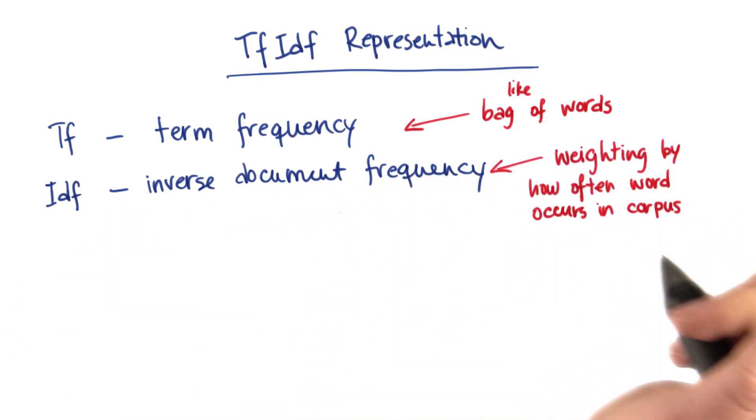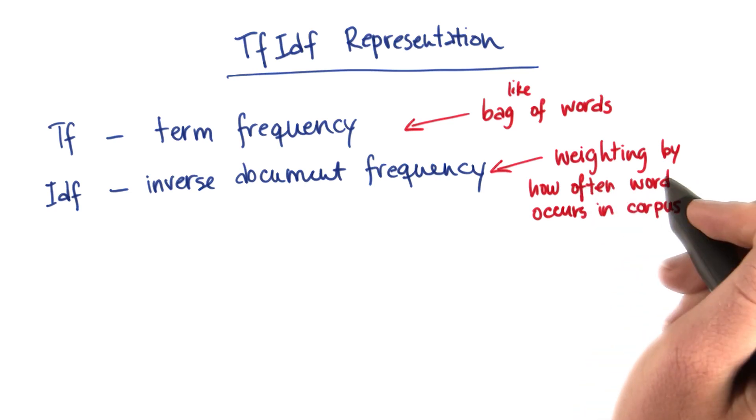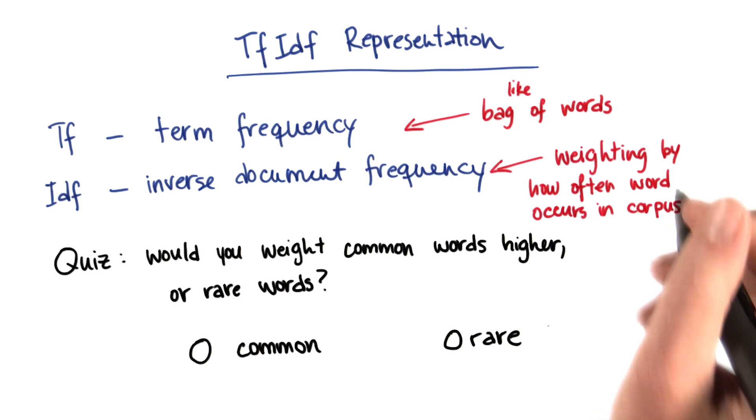The inverse document frequency part is new, though. And the idea here is that the word also gets a weighting that's related to how often it occurs in the corpus as a whole, in all the documents put together. And here's a quiz to make you think about this weighting in a very careful way.